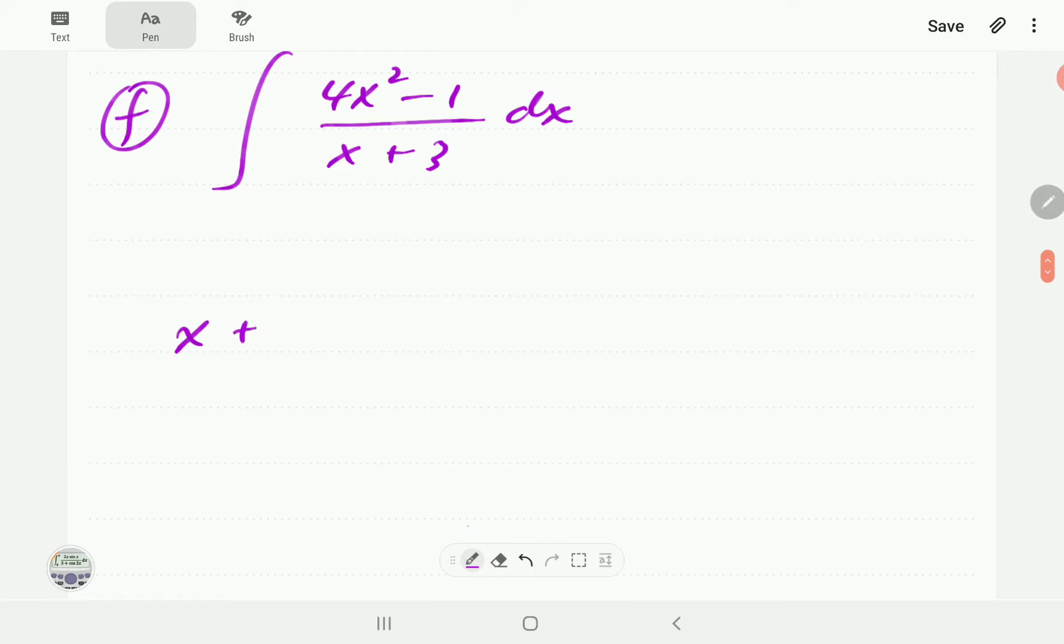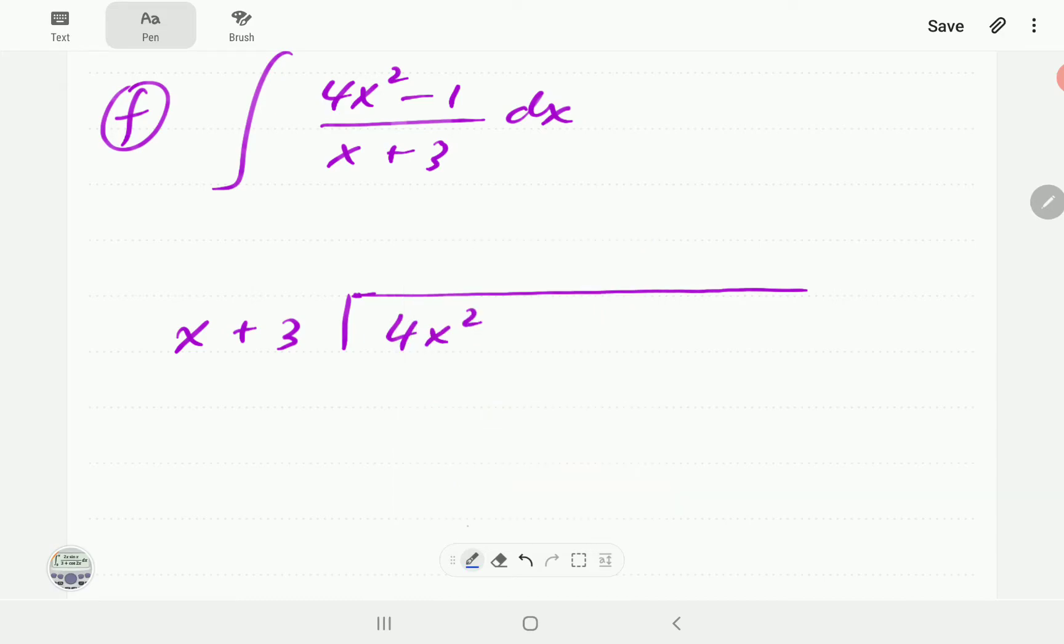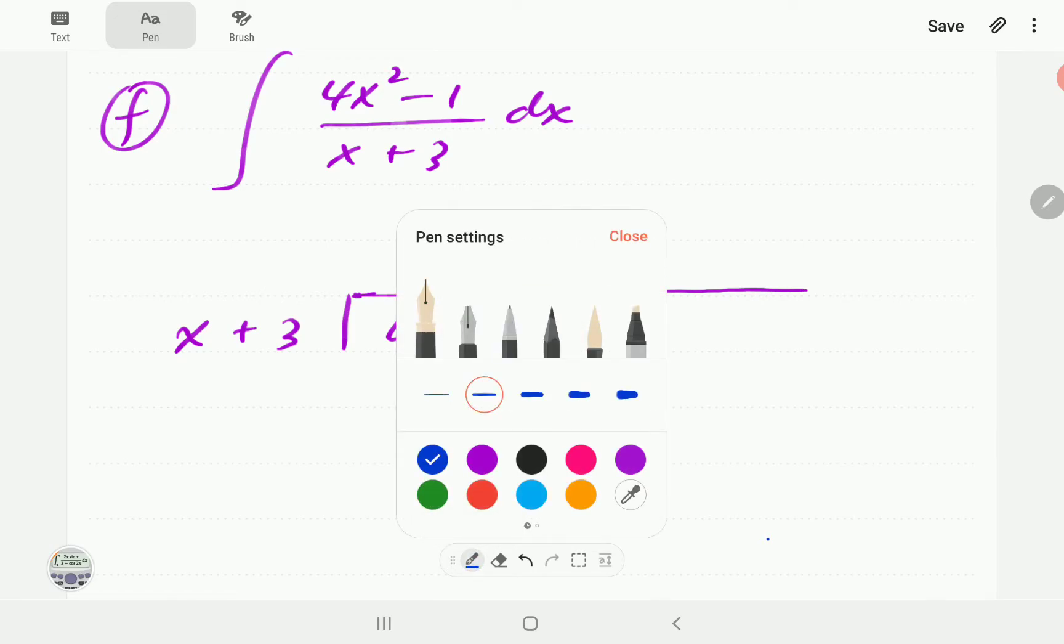We're going to use long division. The dividend we're going to have to make sure that it involves all the powers of x from two. So there is 4x² then the next term which is x to the power one does not appear so what we do is we put a placeholder here 0x.